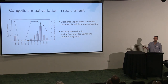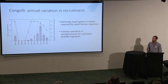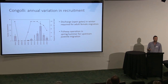To summarise for this species, it's actually quite simple. Discharge through open gates needs to be provided during winter to allow migration of females. And the other important thing is fishway operation during spring and summer for the upstream migration of juveniles.